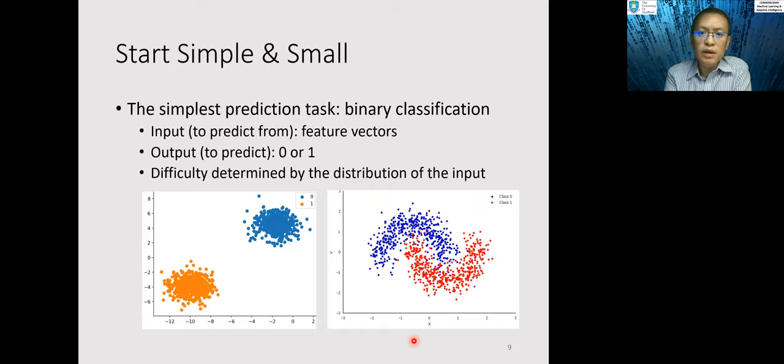Therefore, in developing machine learning applications or algorithms, it is often useful to start simple and small. And the simplest prediction task is a binary classification task, where the input is some kind of features or feature vectors. And the output is simply a binary value that is either zero or one. And how difficult this prediction task is, is determined by the distribution of the input data. For example, the left panel is much easier to classify than the data in the right panel.